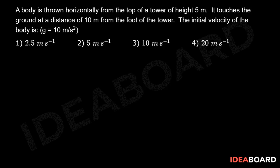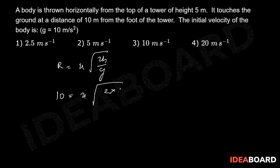We know that r equal to u into square root of 2h by g. Here r equal to 10, equal to u into square root of 2 into 5 by 10. Solving this, we get u equal to 10 meter per second. So option 3 is the correct answer.